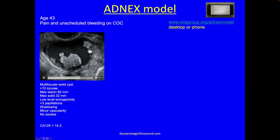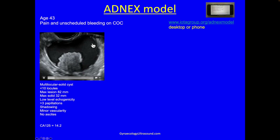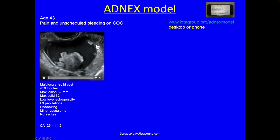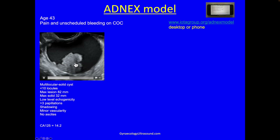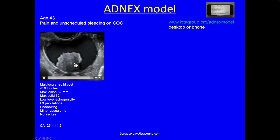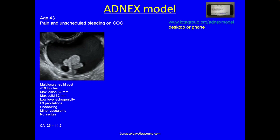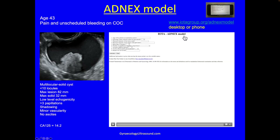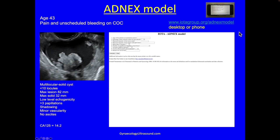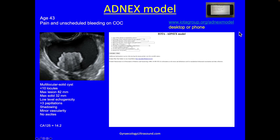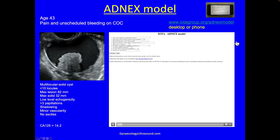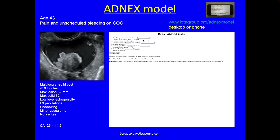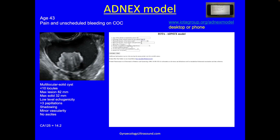Low level echogenicity. More than three papillations — you'd have to measure each one, making sure it's more than three millimeters in height. There is some shadowing visible. Minor vascularity, as not seen here. No ascites with a normal CA125. You can then use the model either on your desktop or on your phone, entering the patient's age of 43. She was scanned in an oncology center.